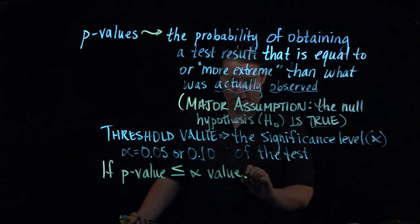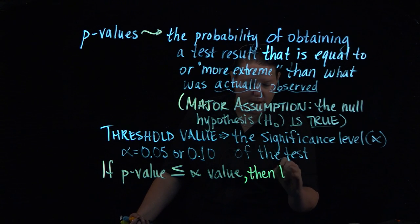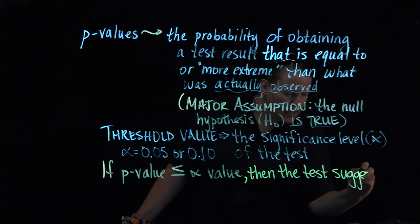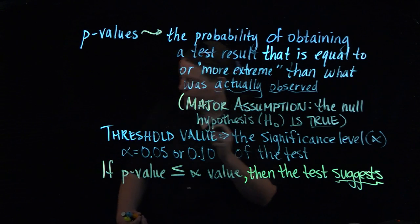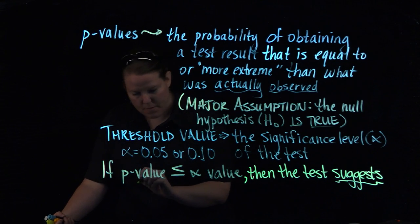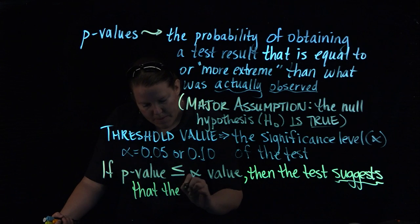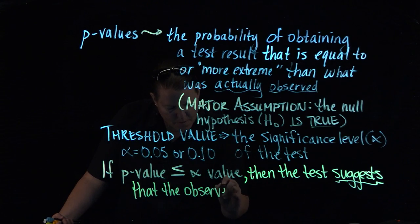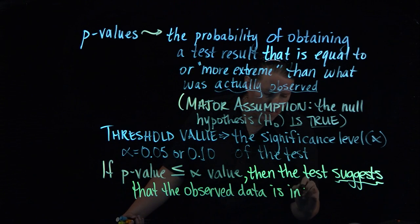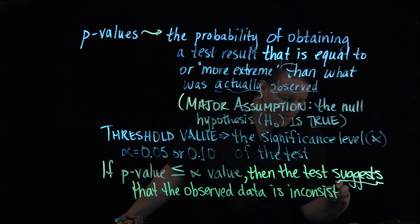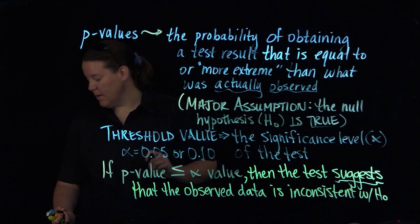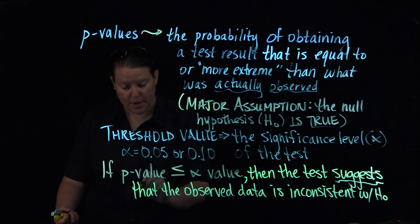we're going to write this in a different color, then the test suggests, it doesn't state that it's absolutely true, it just suggests that the observed data is inconsistent with the null, with the null hypothesis, and therefore the null hypothesis is rejected.